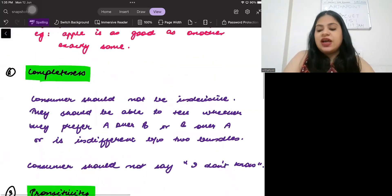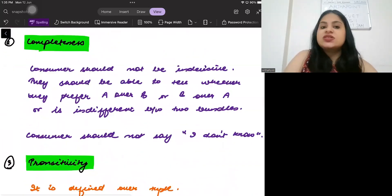The second preference that we have is called completeness. What is completeness? Completeness says that you should be able to compare. You should not be indecisive. You should not be able to say I don't know. You have to give a decision. That means that if I give you two bundles, then you should be able to tell me whether you prefer A over B or B over A or you are indifferent between A and B.